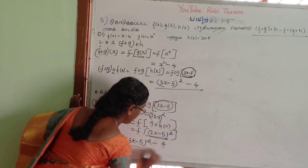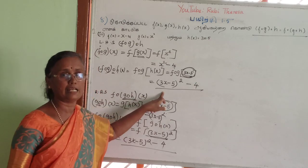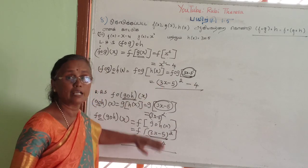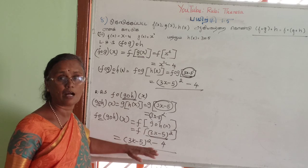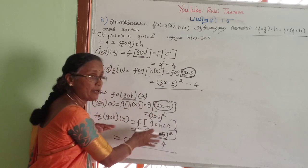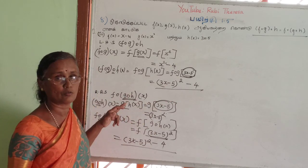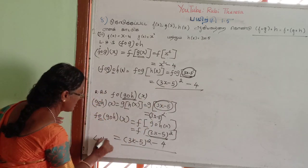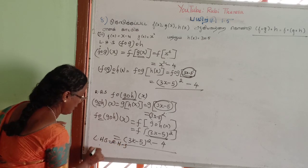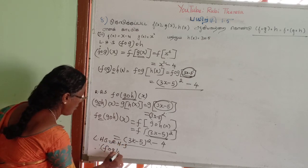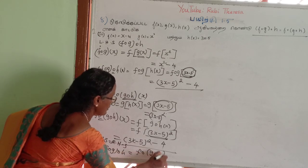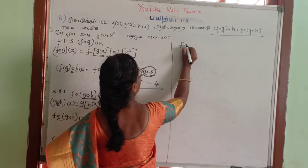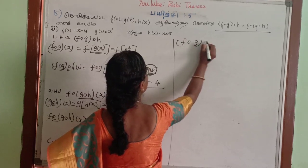Two sides are the same. The function is equal. Then F of H equals F of G of H. F of G of H. F is X minus 4.